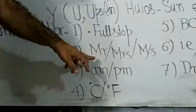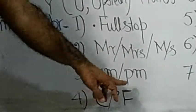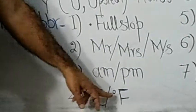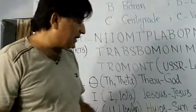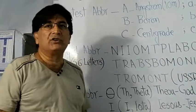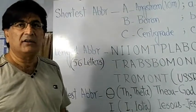The second most common abbreviation is Mr, Mrs, and Messrs. Third is AM for ante meridiem and PM for post meridiem. Fourth is degree centigrade and degree Fahrenheit. Then BC and AD. Then e.g. and etc. And seventh is Dr for Doctor, Prof for Professor, Sr for Senior, CDR, and Jr for Junior. These seven are the most frequently used abbreviations in English.